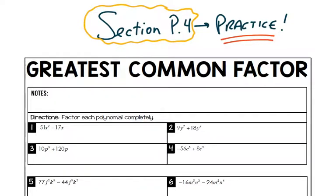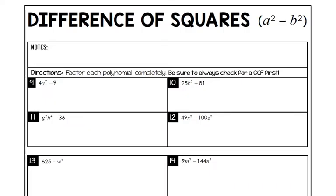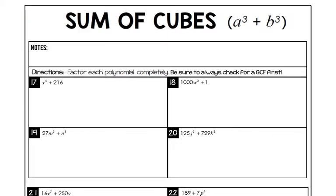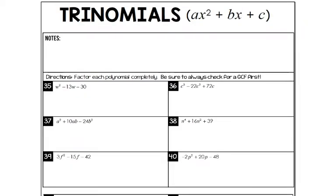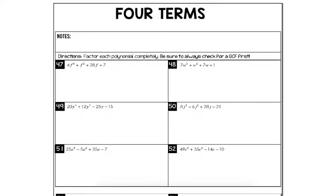Just to review again: we've got the GCF, which is super important — we always start factoring by looking for a GCF. We've got a difference of squares formula, sum and difference of cubes. We have trinomials, and when A equals 1, that was pretty okay, not too bad. When A was not equal to 1, that was harder. We talked about rewriting it into four terms and grouping.